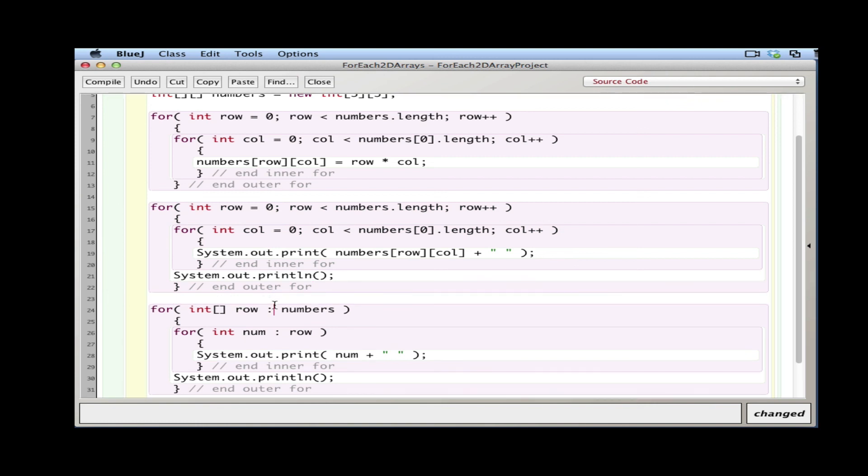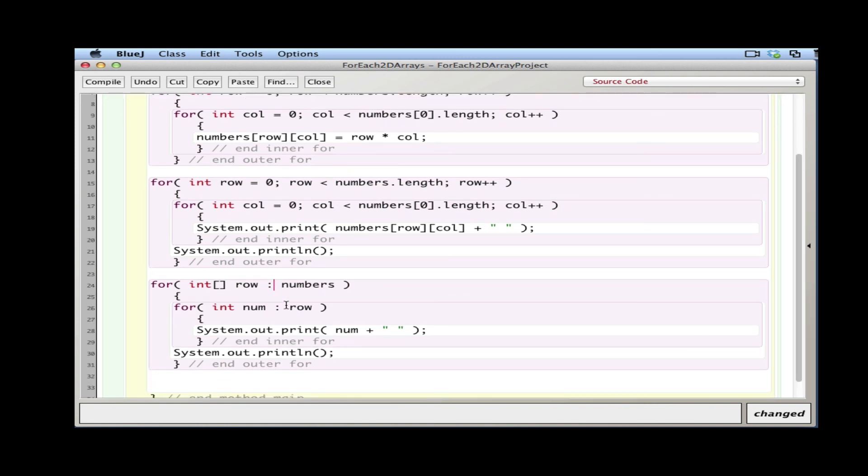You can see it's a lot more compact. We don't need to keep track of rows and columns or counters. We don't need to increment them with the plus-plus. All we just need to do is have the same structure of the inner and outer for loop so we can process those numbers. That's a simple example of how we can use for-each loops with 2D arrays.